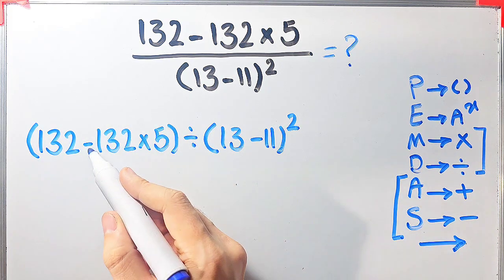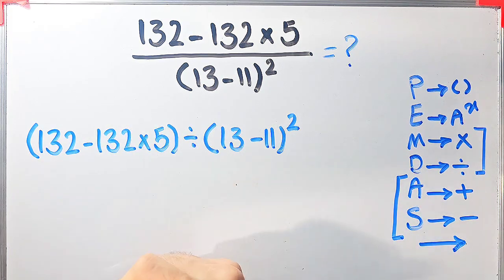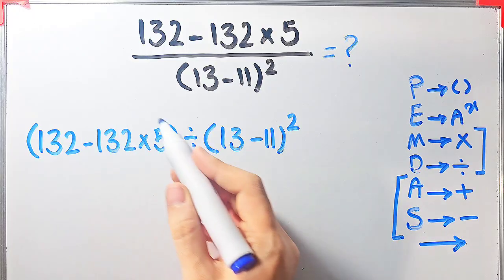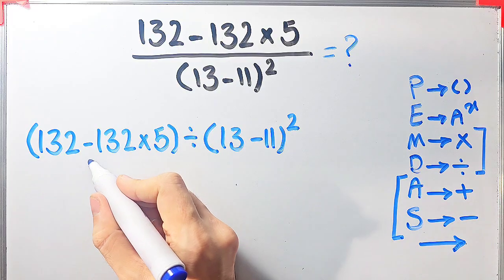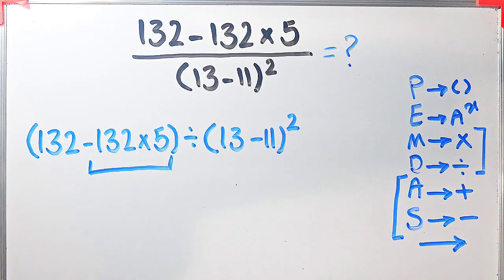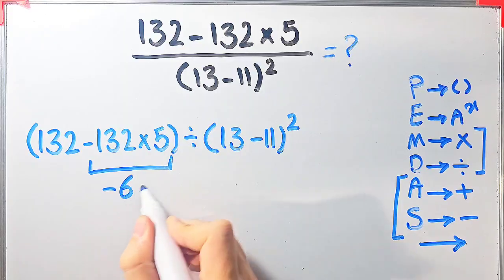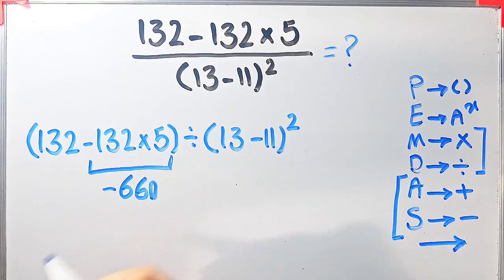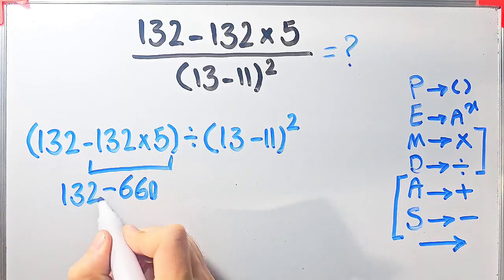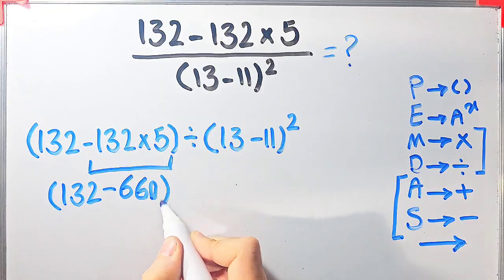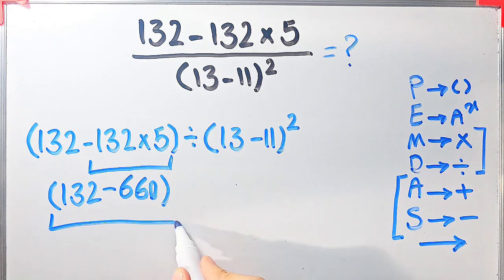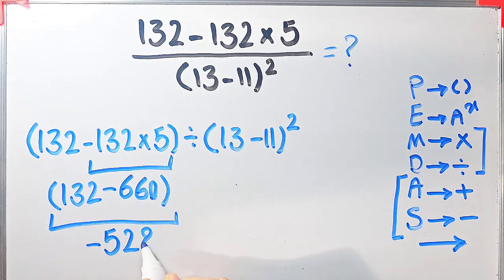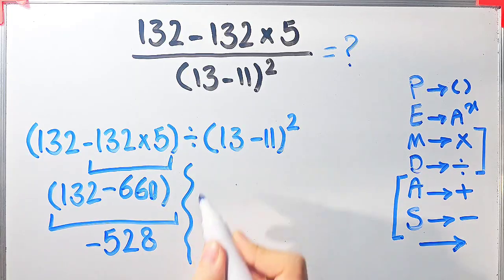Inside the parentheses we have subtraction and multiplication. First we simplify the multiplication because multiplication has higher priority than subtraction. Negative 132 times 5 equals negative 660. Now we have 132 minus 660. 132 minus 660 equals negative 528.